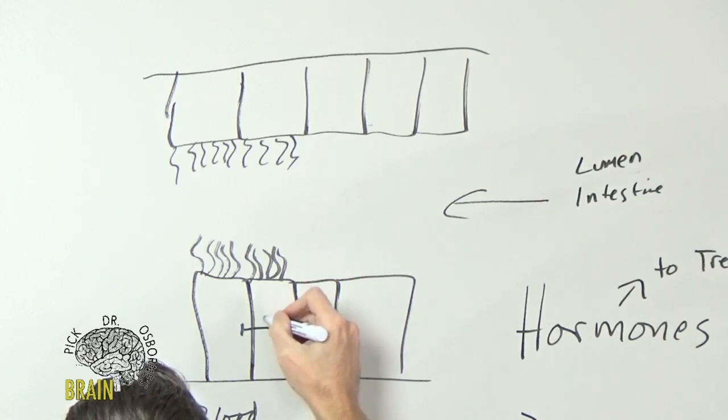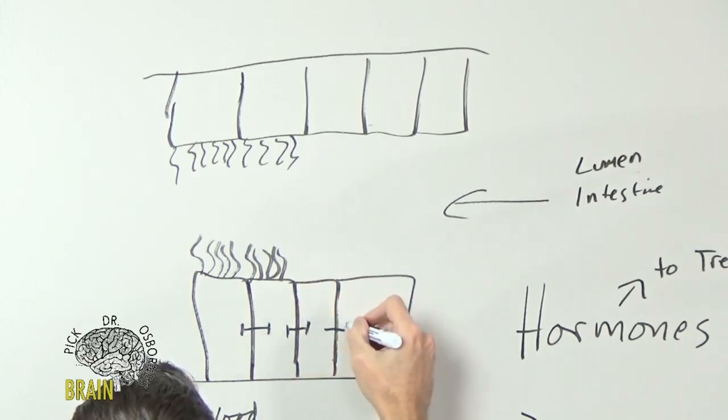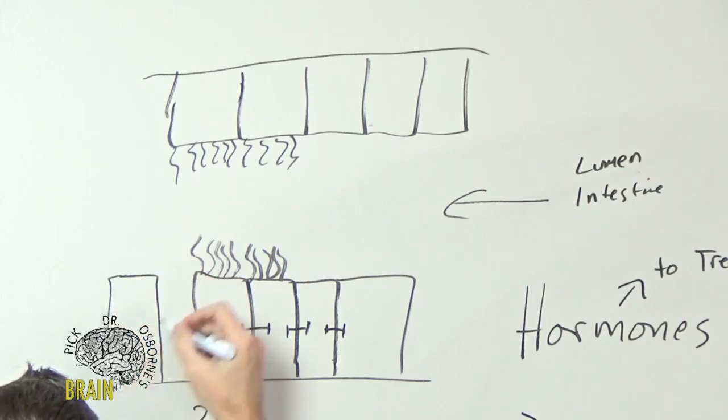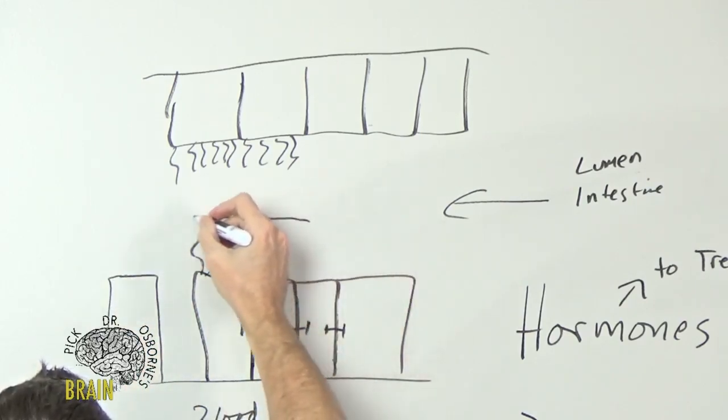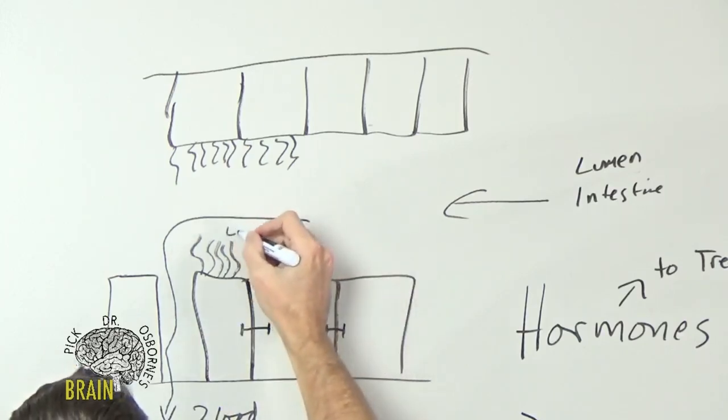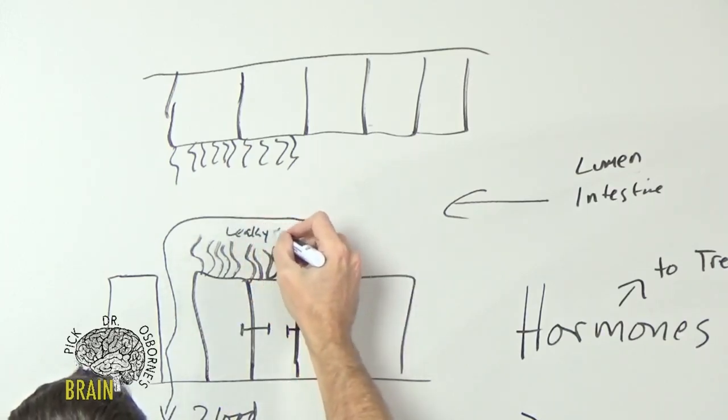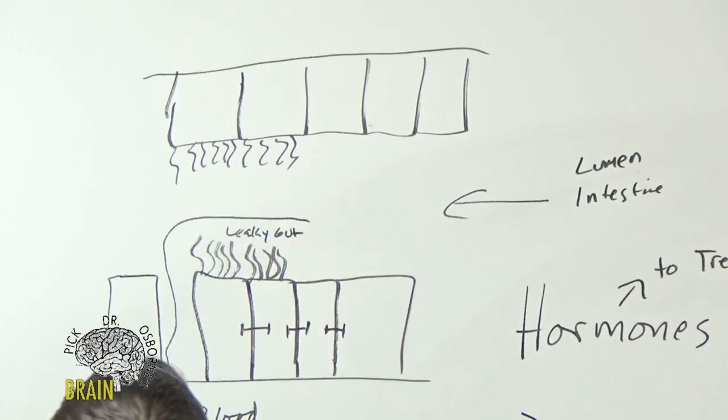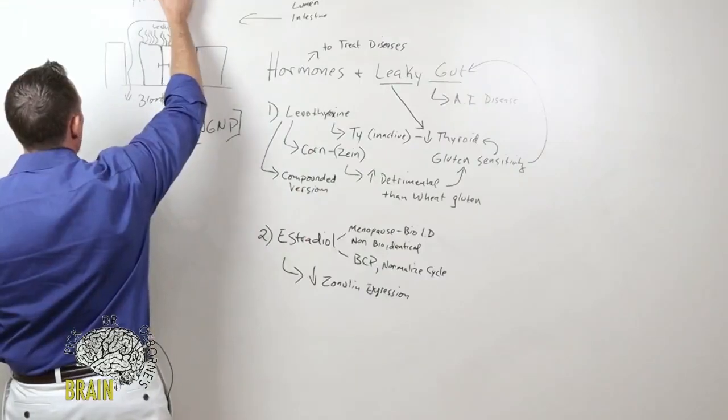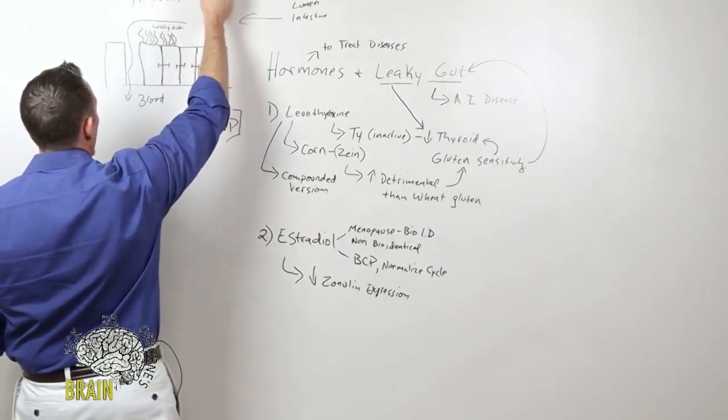If you don't have these proteins that anchor the cells together, you get cells that drift apart. When that food protein or bacteria comes through, this is a leaky gut. This is what leaky gut looks like. These cells separate or drift apart, and that leaky gut allows things in your gut to leak into your bloodstream and create systemic inflammation and contribute to autoimmune disease.